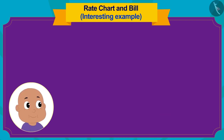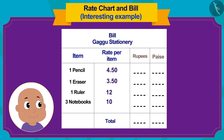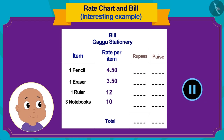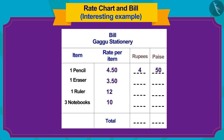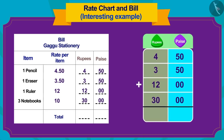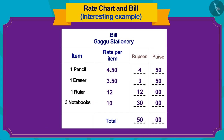This is the bill for the purchased items of Bablu. Can you complete it and find out whether Bablu bought less or more items than Raju, and how much money he spent? If you want, you can pause the video and find the answer. Well done kids — you have done it perfectly!